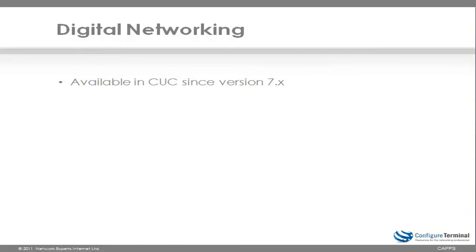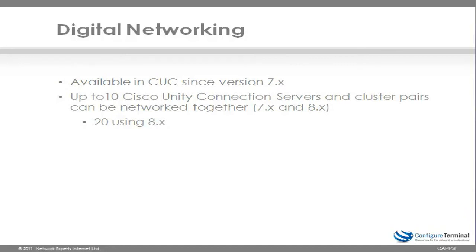Digital networking became available in Cisco Unity Connection from version 7. Up to 10 Cisco Unity Connection servers and cluster pairs can be networked together, so there was a restriction in version 7 of only 10 servers. If you have a pure version 8.x environment, up to 20 locations can be networked together. Essentially, you put a single server or a cluster pair into a location — up to 10 in version 7, or 20 in version 8, can be networked together.